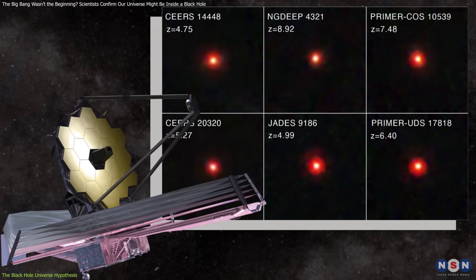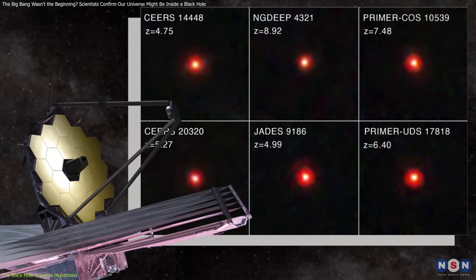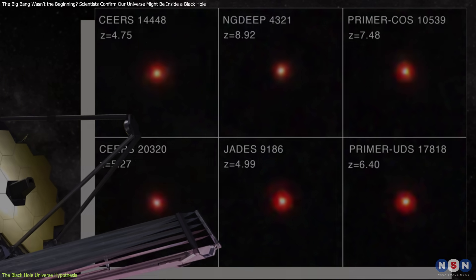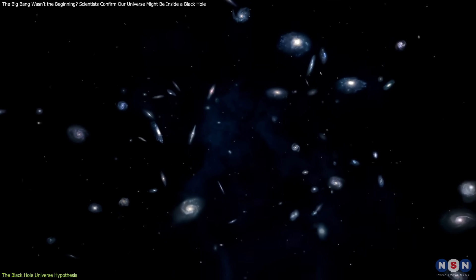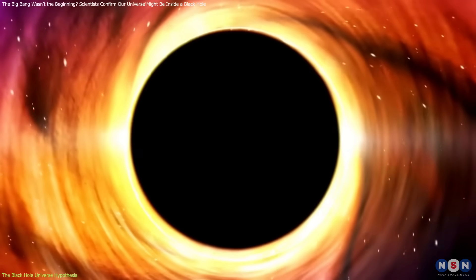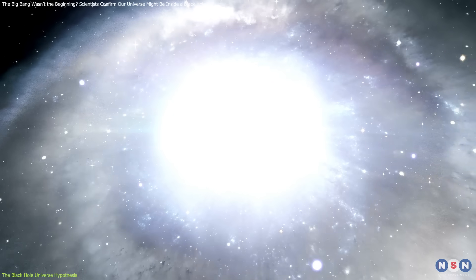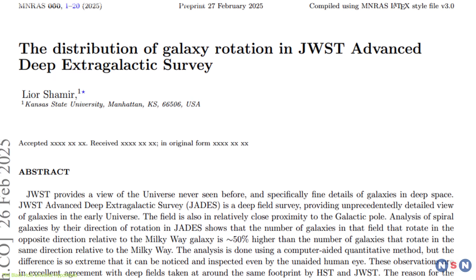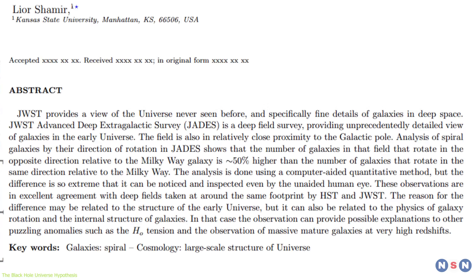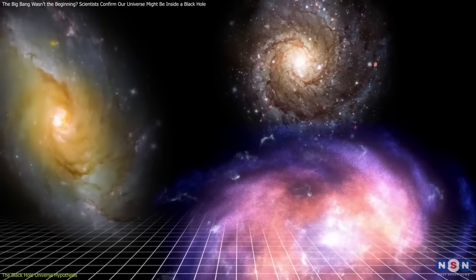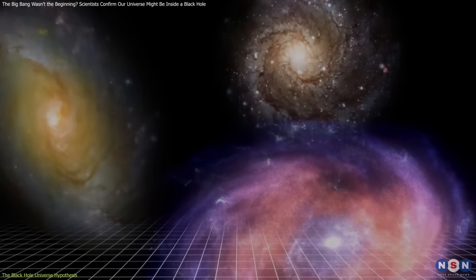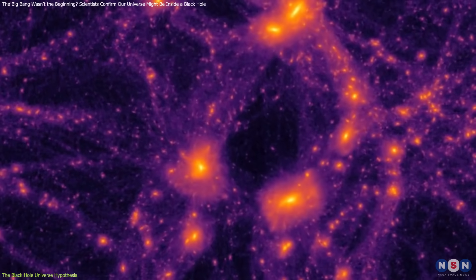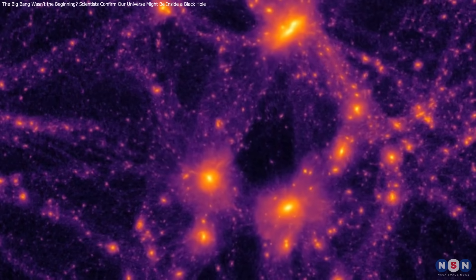JWST's impossible galaxies, observations of surprisingly mature, massive galaxies at very early epochs, might make sense if some structure or matter was inherited from a pre-bounce phase accelerating galaxy formation. While still speculative, this theory offers a unifying explanation for several anomalies, linking the spin bias in galaxy rotations, the presence of unexpectedly old galaxies, and large-scale cosmic alignments into a coherent framework.